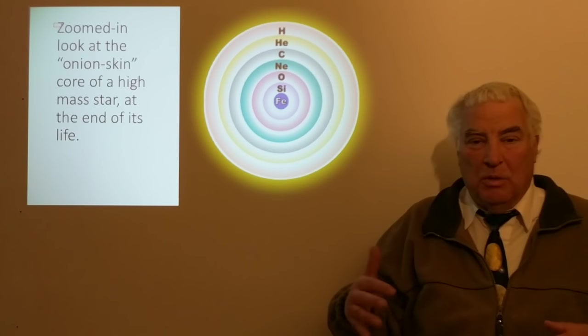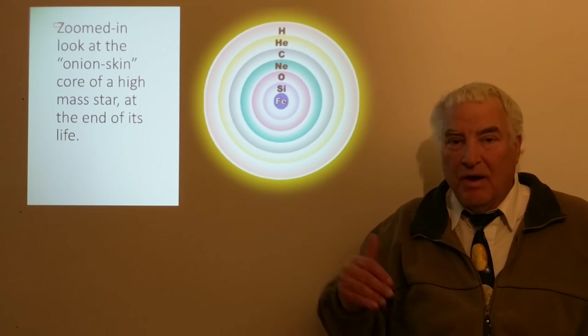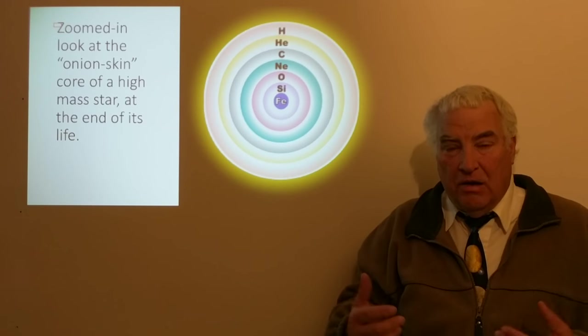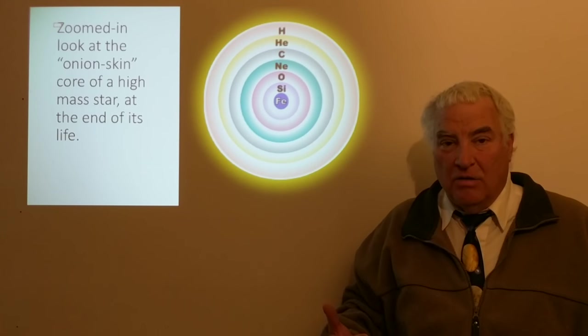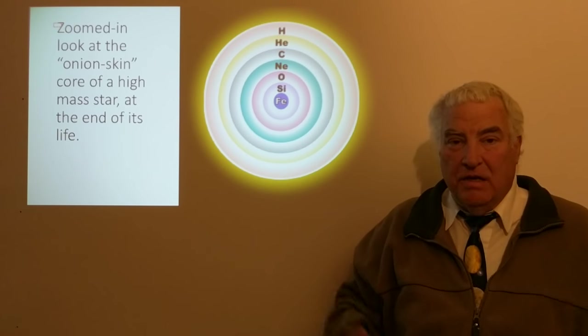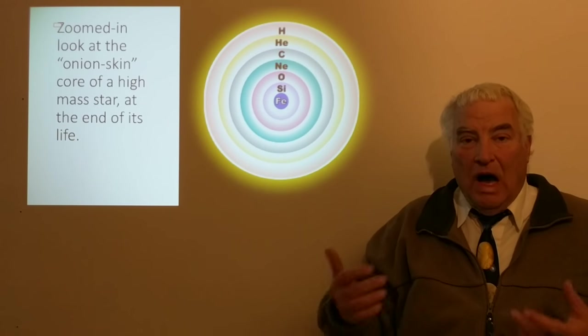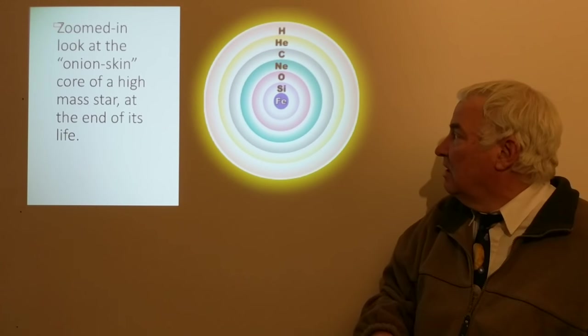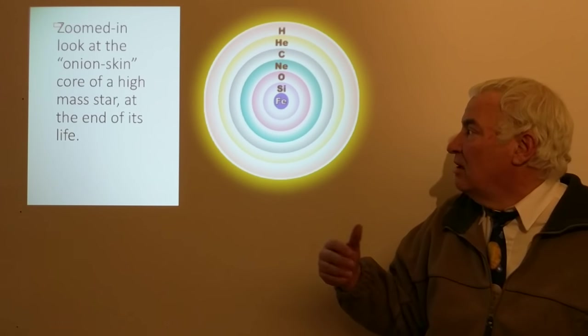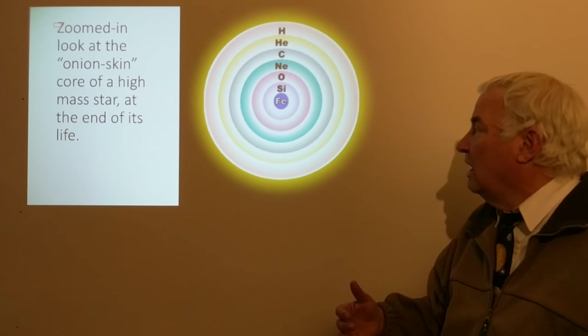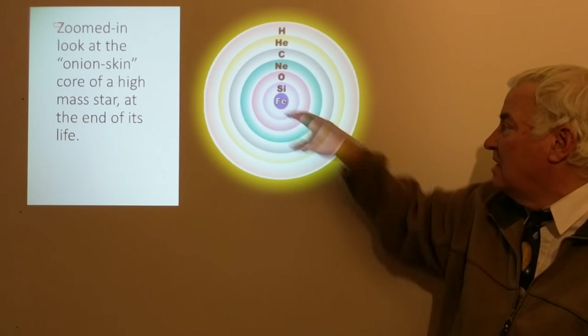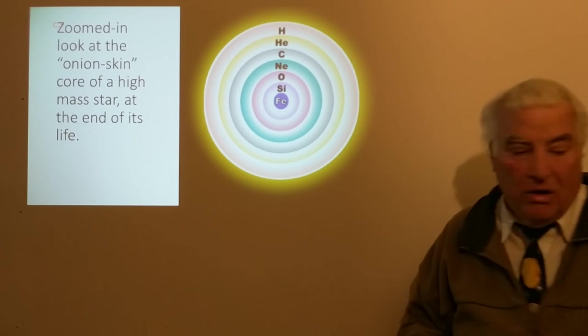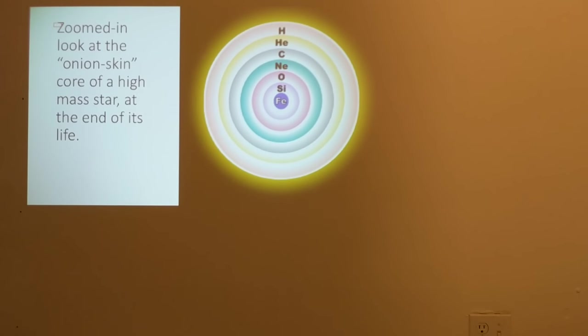Iron is element number 26, and it's very important in this process because you cannot fuse iron and get energy out. It takes energy to fuse it. So iron is a very stable element, and once you have it, the star is not able to use it as fuel. Therefore, once it makes the iron core, it's at the end of its life. It can no longer have energy to shine.